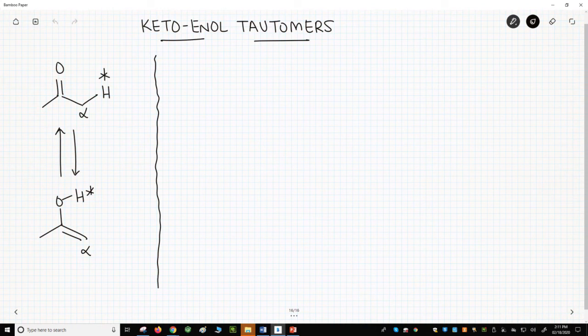A hydrogen on the alpha carbon in the keto form migrates to the oxygen of the carbonyl in the enol form.